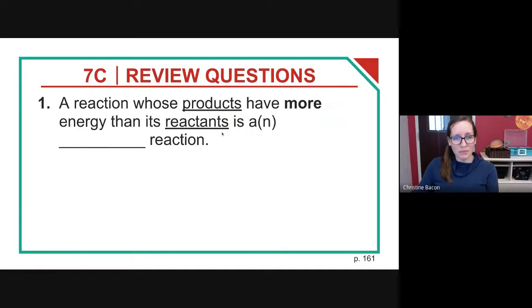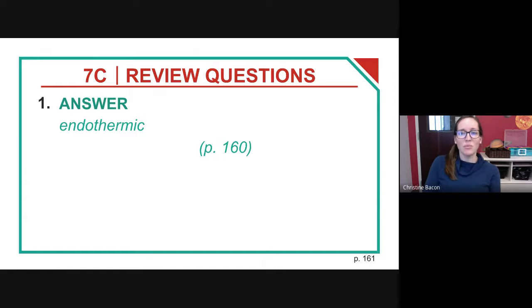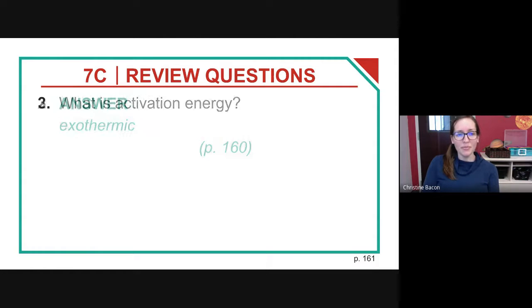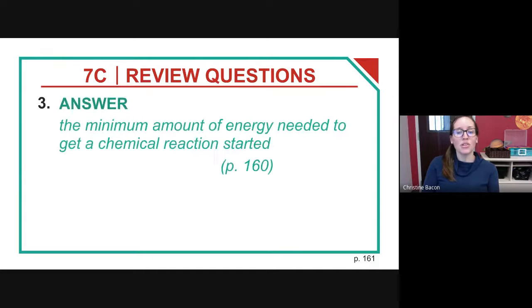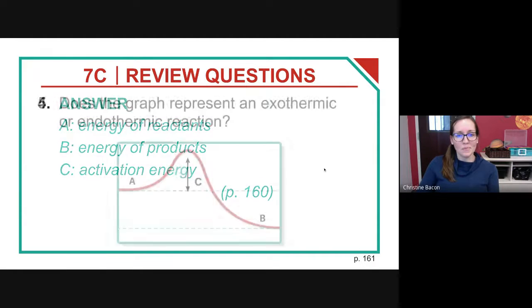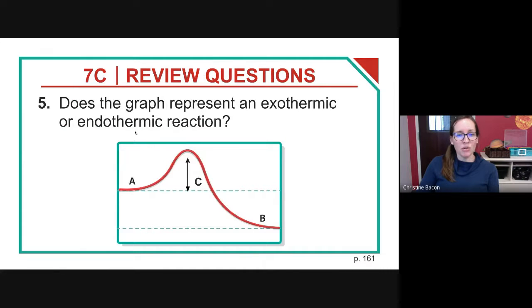Let's go over the review questions. A reaction whose products have more energy than its reactants is an endothermic reaction. Is combustion a type of exothermic or endothermic reaction? A combustion reaction is always exothermic — it always gives off more energy than it absorbs. What is activation energy? Activation energy is the amount of energy required to even start a chemical reaction.